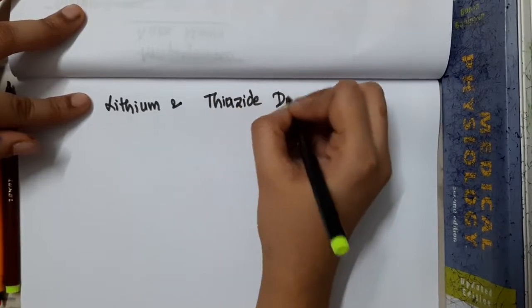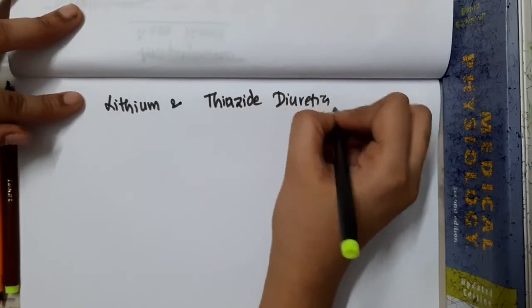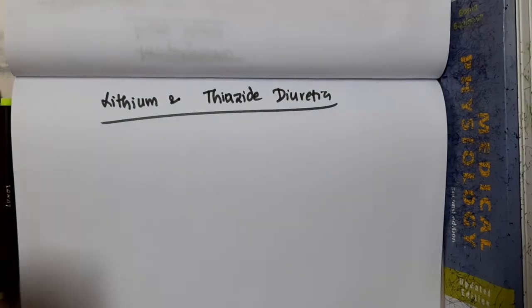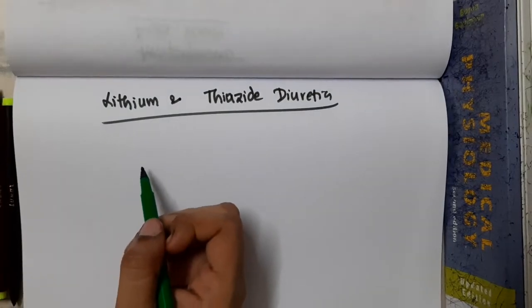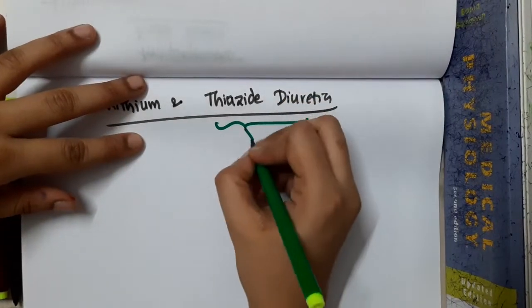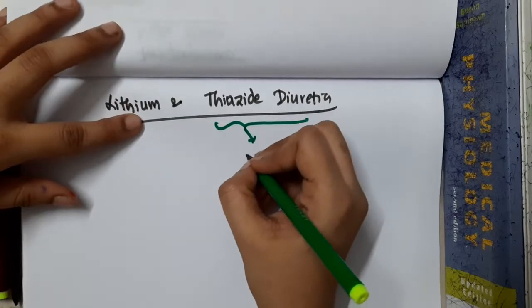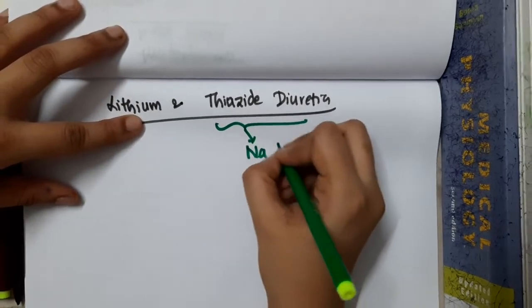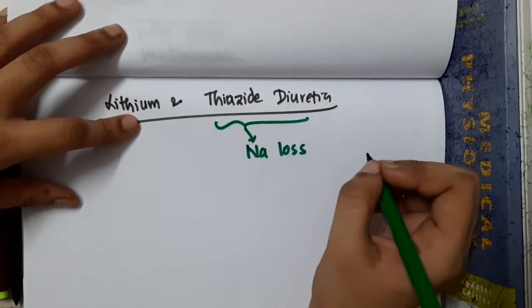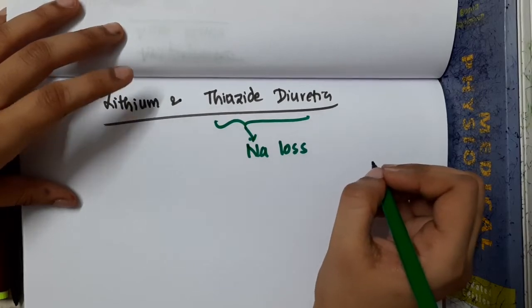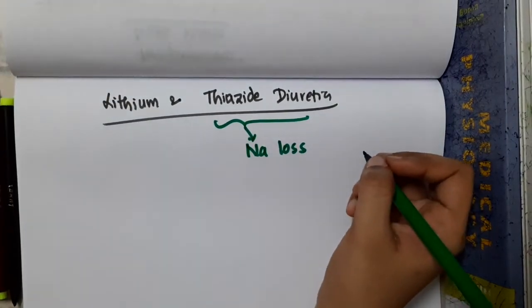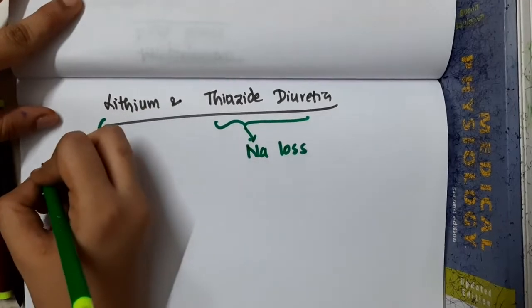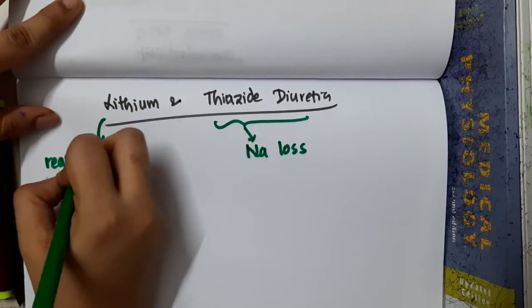So in lithium and thiazide diuretics, thiazide diuretics will cause sodium loss, whereas lithium is reabsorbed actually.